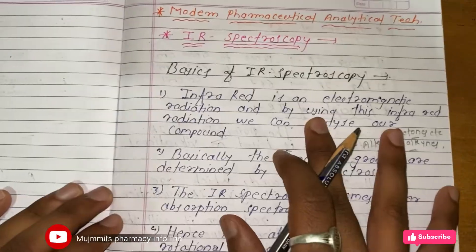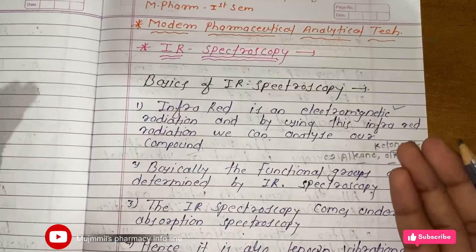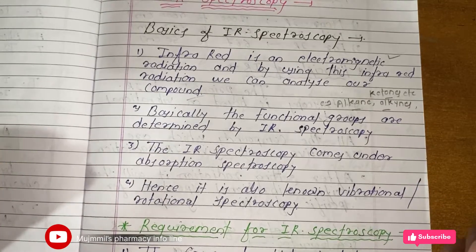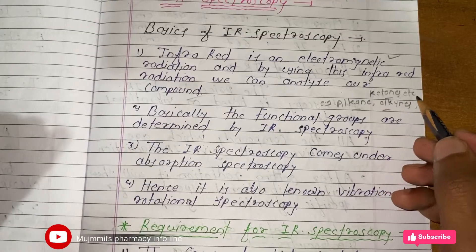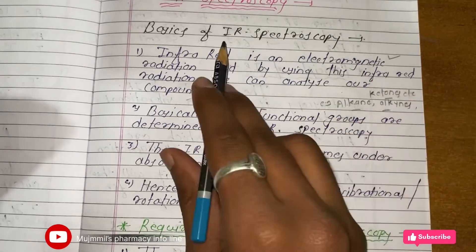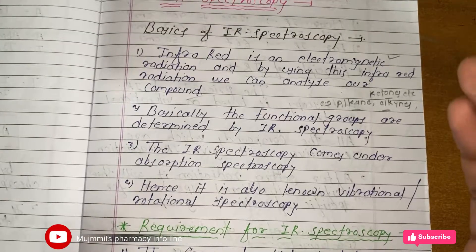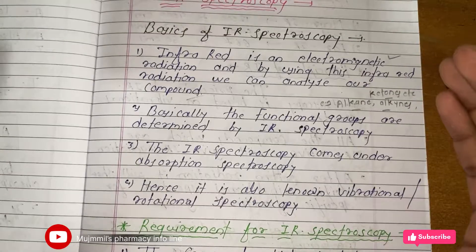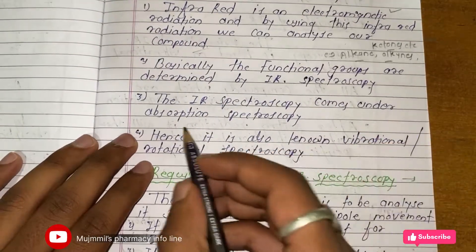Let's start with IR spectroscopy. Infrared is an electromagnetic radiation, and by using this radiation we analyze our compound. Basically, functional groups are determined using IR spectroscopy — for example, alkane, alkyne, or ketone. In drug discovery and development, you need to identify functional groups in unknown compounds, so we use IR spectroscopy. IR spectroscopy comes under absorption spectroscopy.